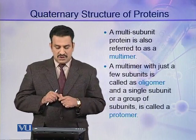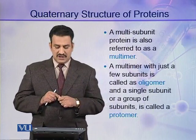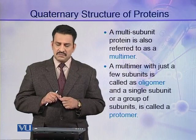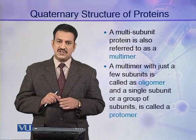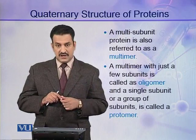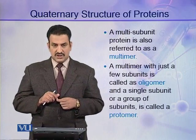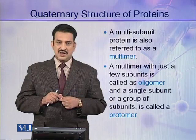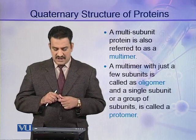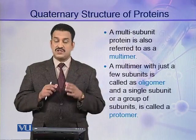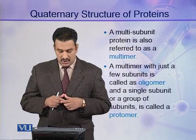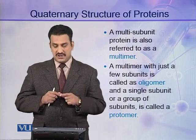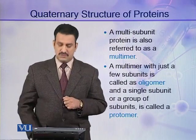A multi-subunit protein is also referred to as a multimer because it contains many subunits. If a multimer contains few subunits, it is called an oligomer, and a single subunit or a group of similar subunits is called a protomer.